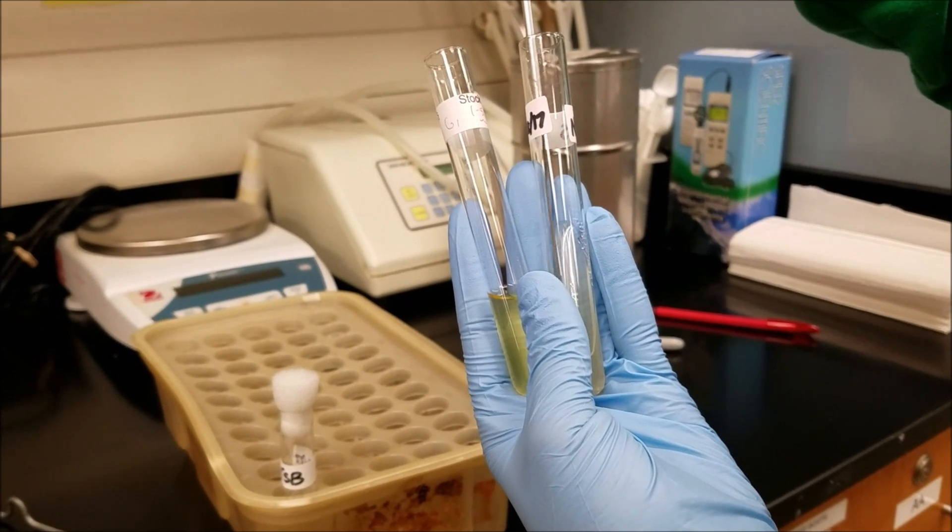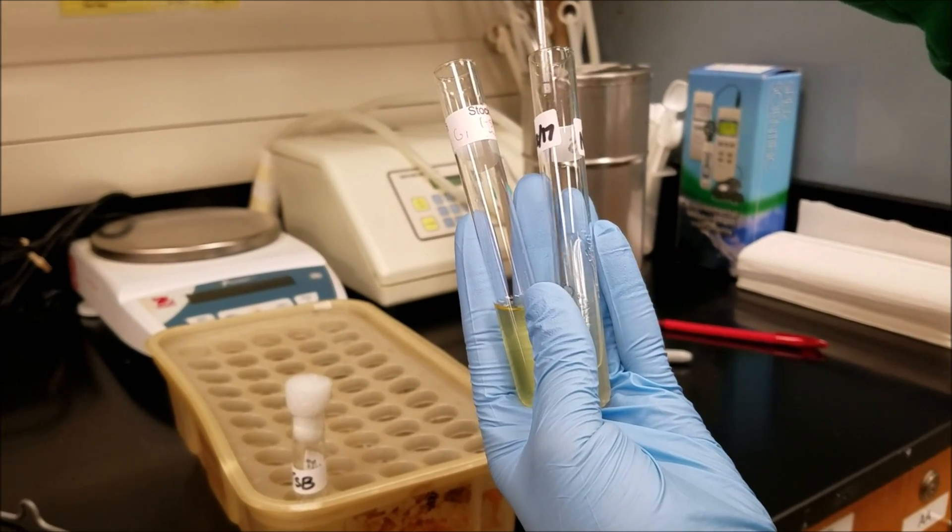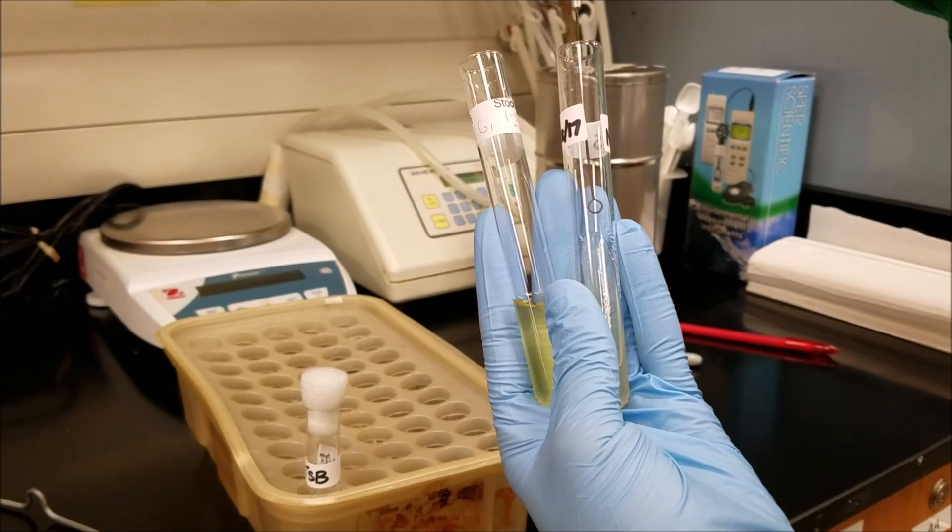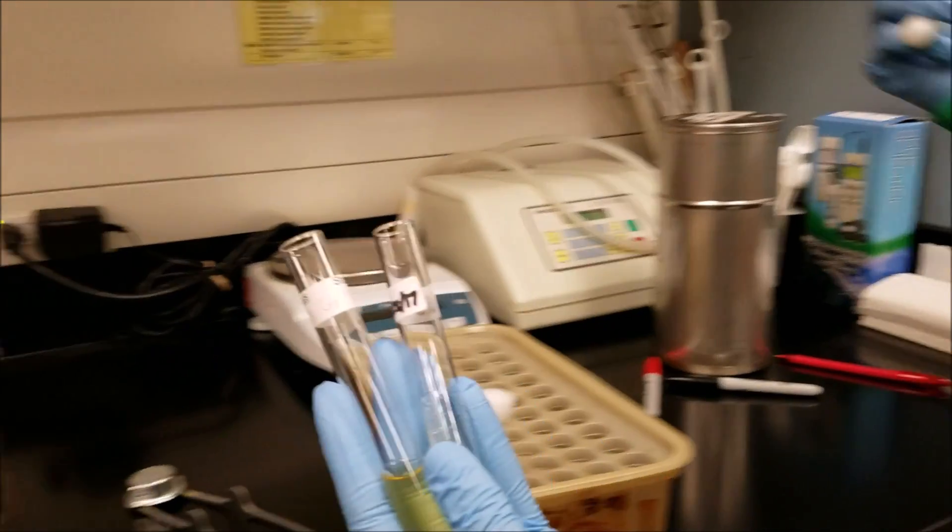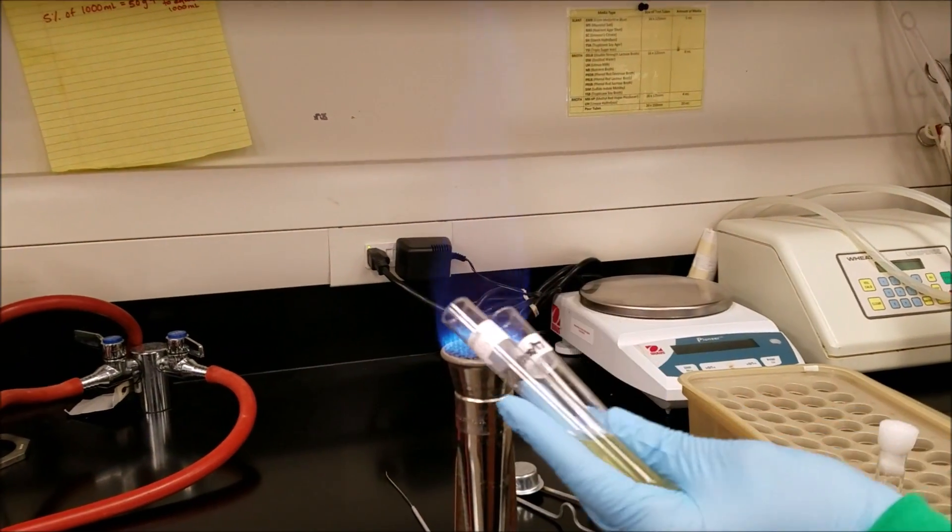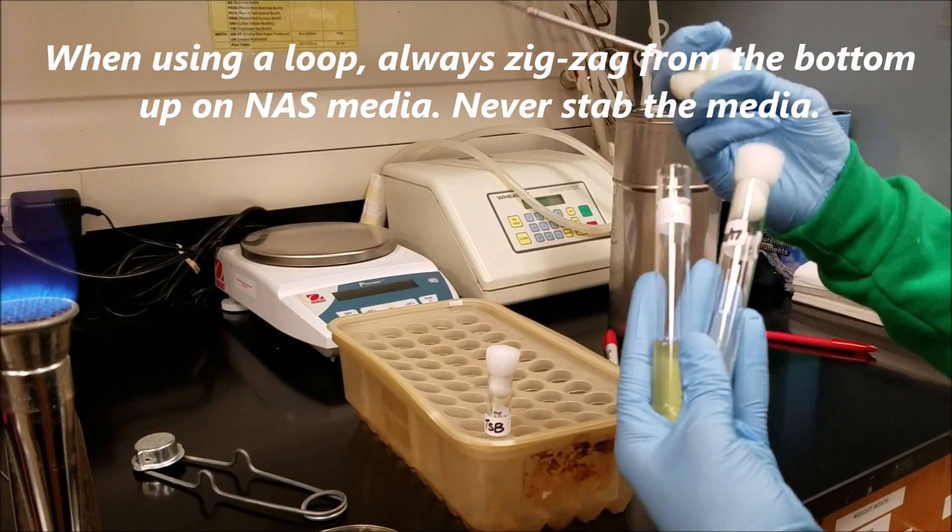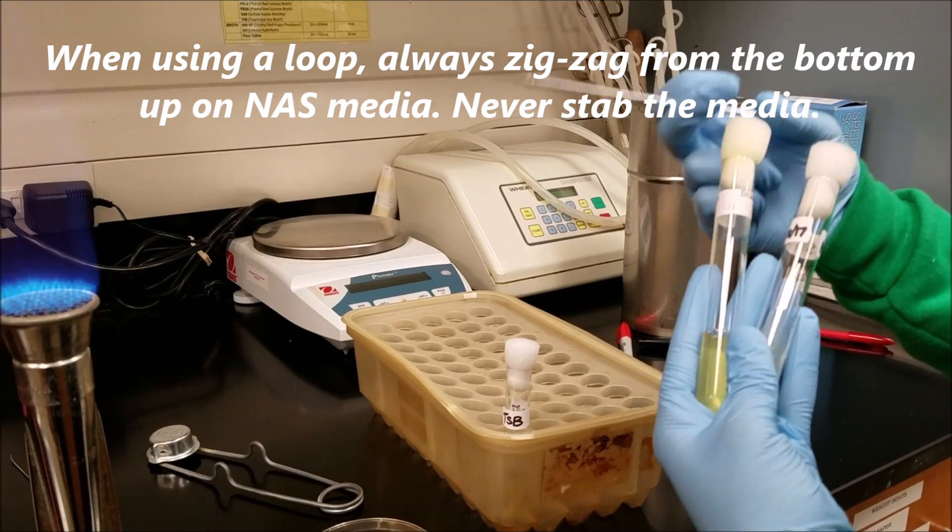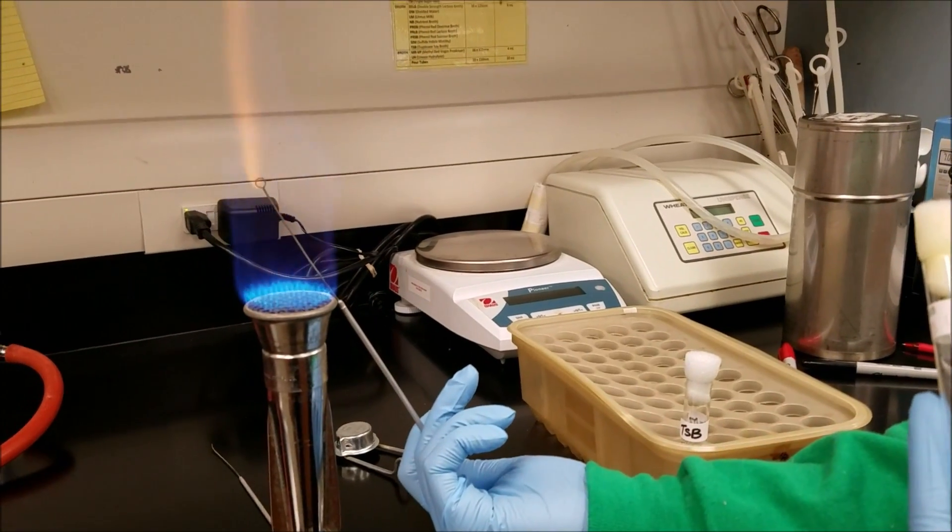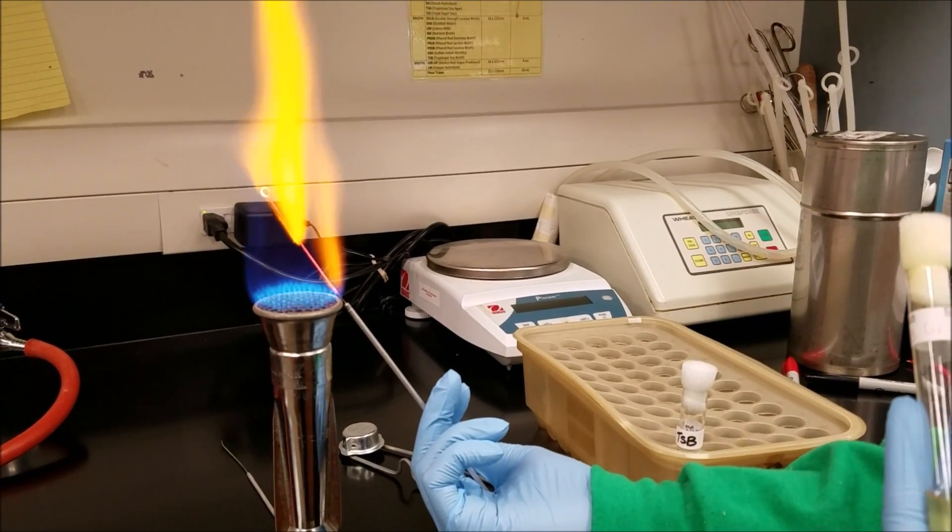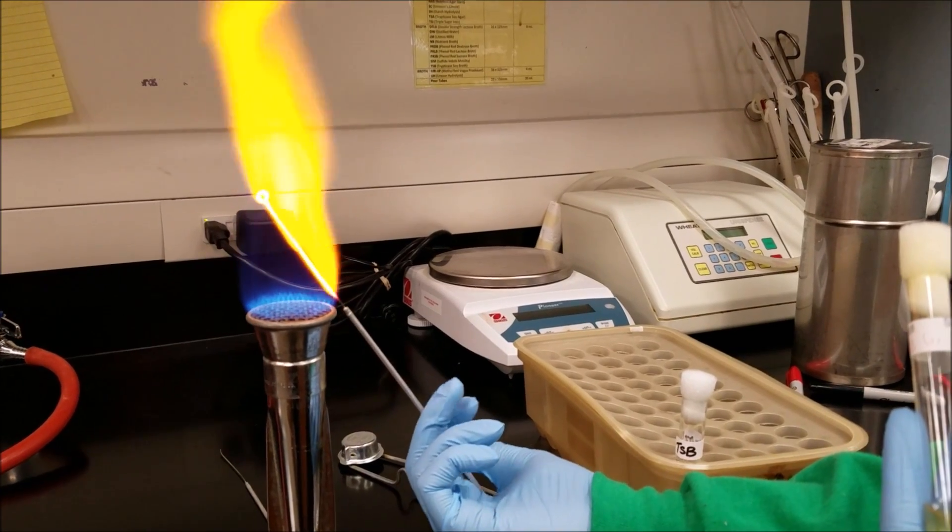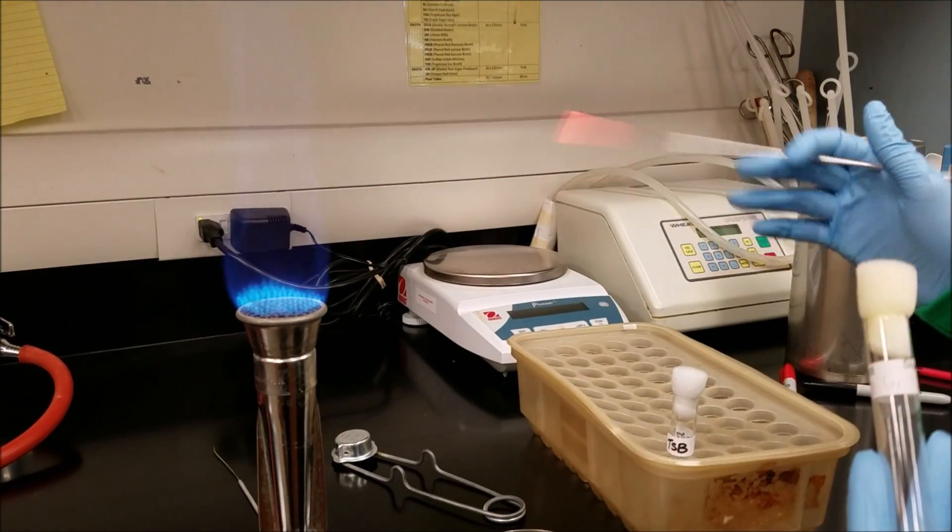you do not want to pierce the media. You just want to gently make a zig-zag motion over the surface of the media. You're going to flame the rims once more, replace the stoppers, flame your loop until it is red-hot.